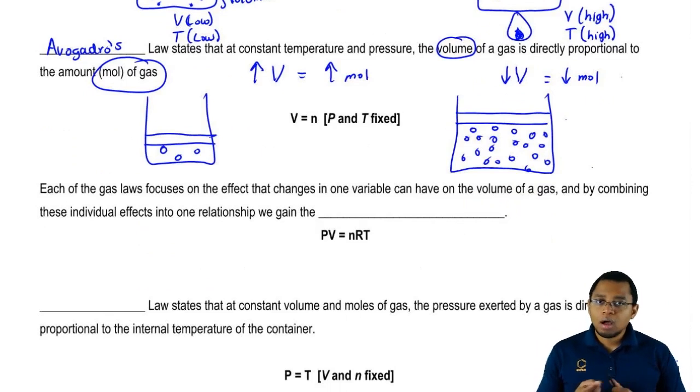We're going to say that Boyle's Law, Charles' Law, and Avogadro's Law, each of the gas laws focuses on the effects that changes in one variable can have on the volume of a gas. These three guys are looking to see the effects that all of these changes have on the volume of a container.